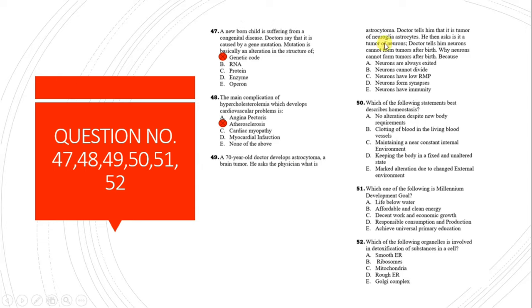Question 49: An elderly doctor with astrocytoma brain tumor is told it is a tumor of astrocytes, not neurons. Neurons cannot form tumors after birth because neurons cannot divide. Once formed, neurons do not divide, so if there is nerve damage in any part of the body, it cannot be reversed or cured.